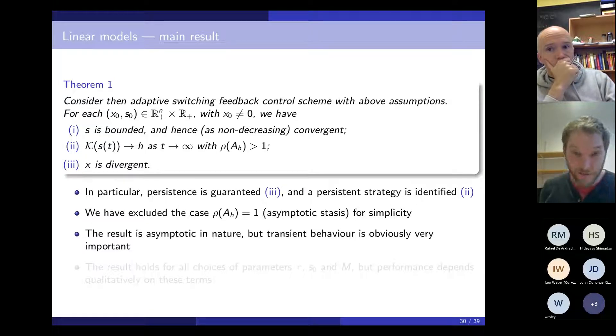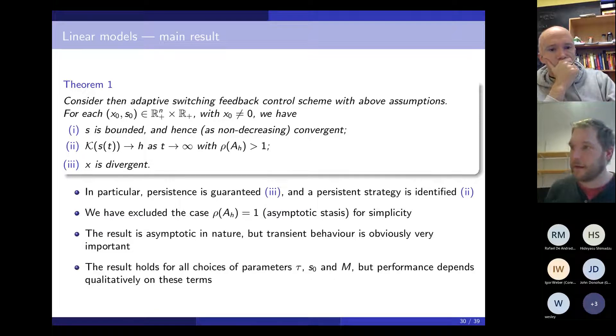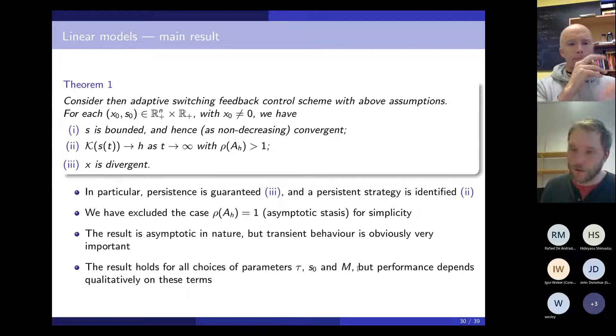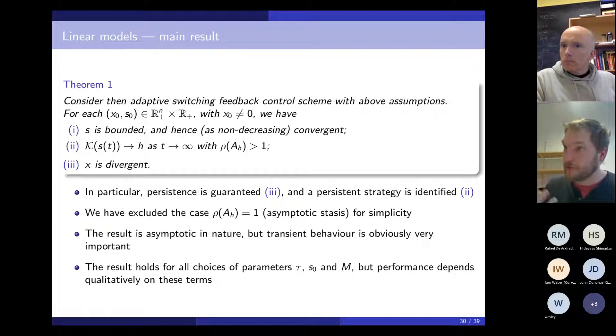These are the sort of results we get. This is our first main result. Consider the adaptive switching feedback control scheme above with assumptions. As long as I don't start at zero—if I start at zero, I stay at zero, so that's not very interesting. As long as I don't start at zero, my switching sequence converges, my switching function converges to a persistent strategy, and X diverges. So in particular, this scheme guarantees persistence. And a persistent strategy is identified. It finds the one or a one which works. There might be more than one. We've excluded this kind of threshold case where the spectral radius is one. Rho is spectral radius, by the way, dominant eigenvalue, which corresponds to asymptotic stasis. That simplifies the analysis. It can be included, but we've excluded it for now. Notice this is an asymptotic result. It tells you about what happens after large time. Clearly, in conservation, transient behavior would be really important. So I'll say something a bit more about that later. You've got some parameters to choose—some design terms. There's this underlying sequence tau. There's your initial S and your threshold M. The theorem is true for any of these values, but as you can expect, the performance depends qualitatively on how you choose them.